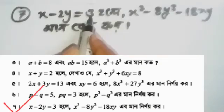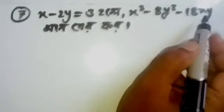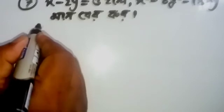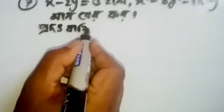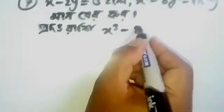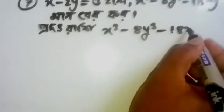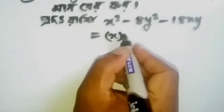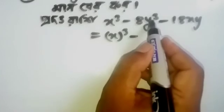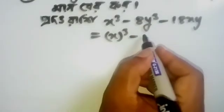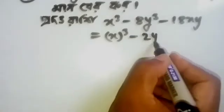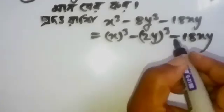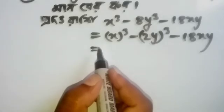2y equals 3. We have x cubed minus 8y cubed minus 18xy. We need to simplify this. We look at 8y cubed minus 18xy, and work through the delivery: 2 into 2 into 2, and three to two, using the whole cube minus formula.